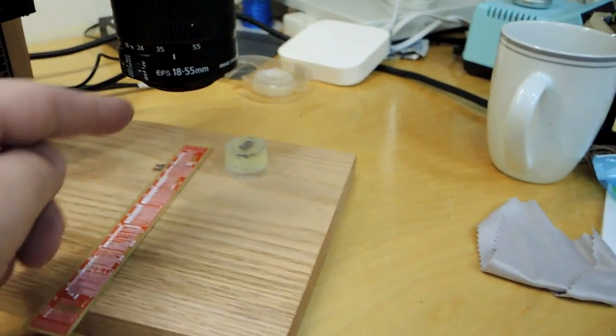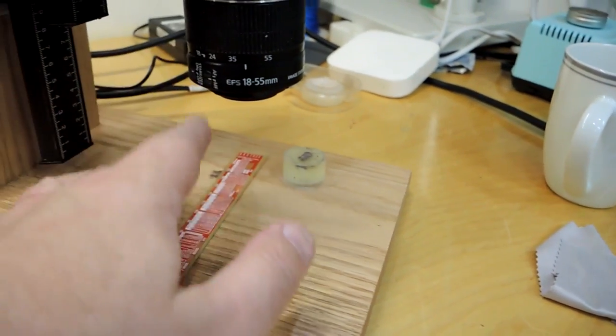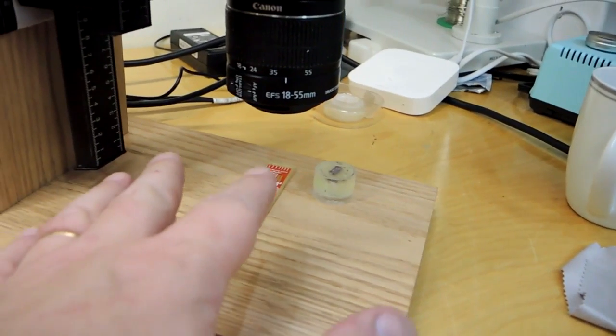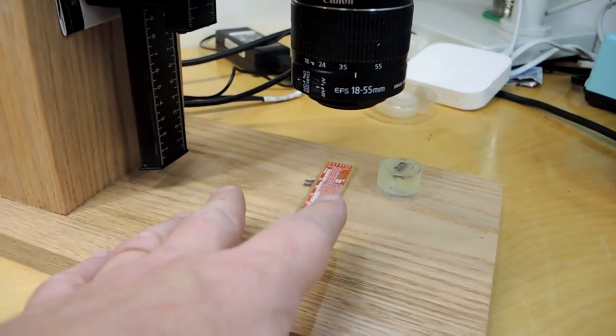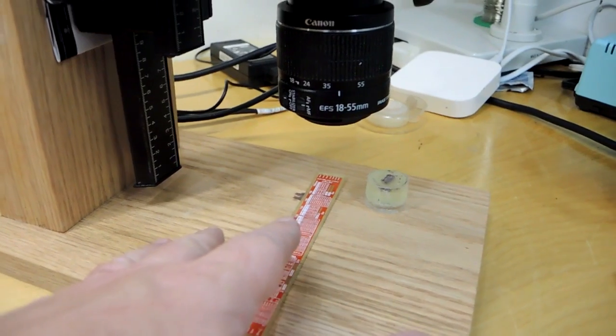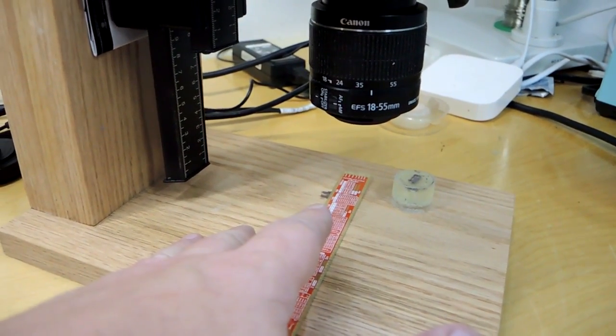We can get it in focus really precisely with a macro rail. Now I can take the photograph here. Because I haven't adjusted the camera, they'll both be in the exact same scale, and I can import these two photographs into a CAD system and do some analytic math.